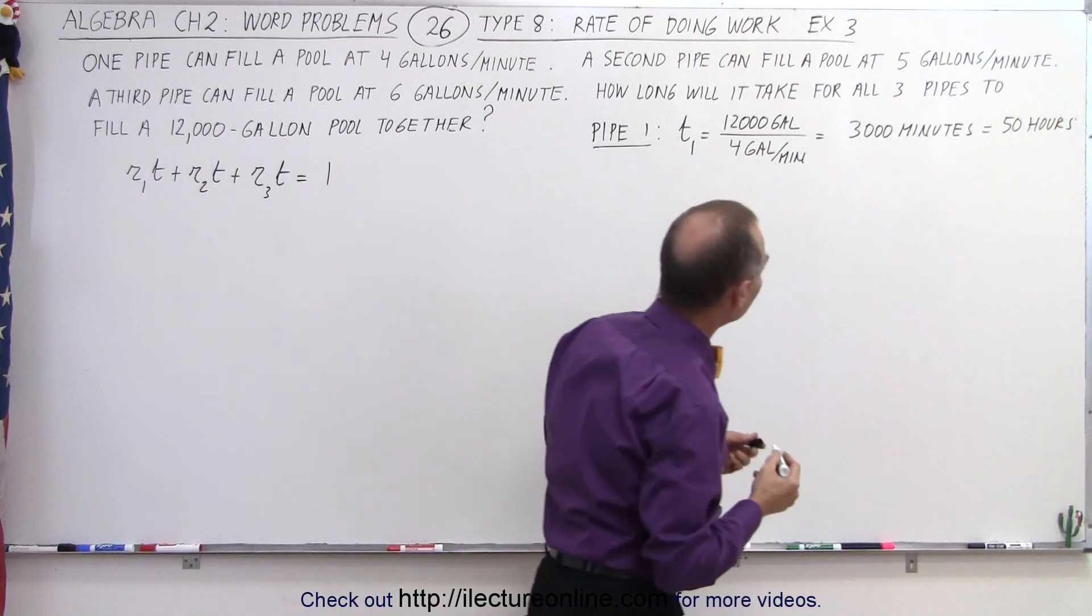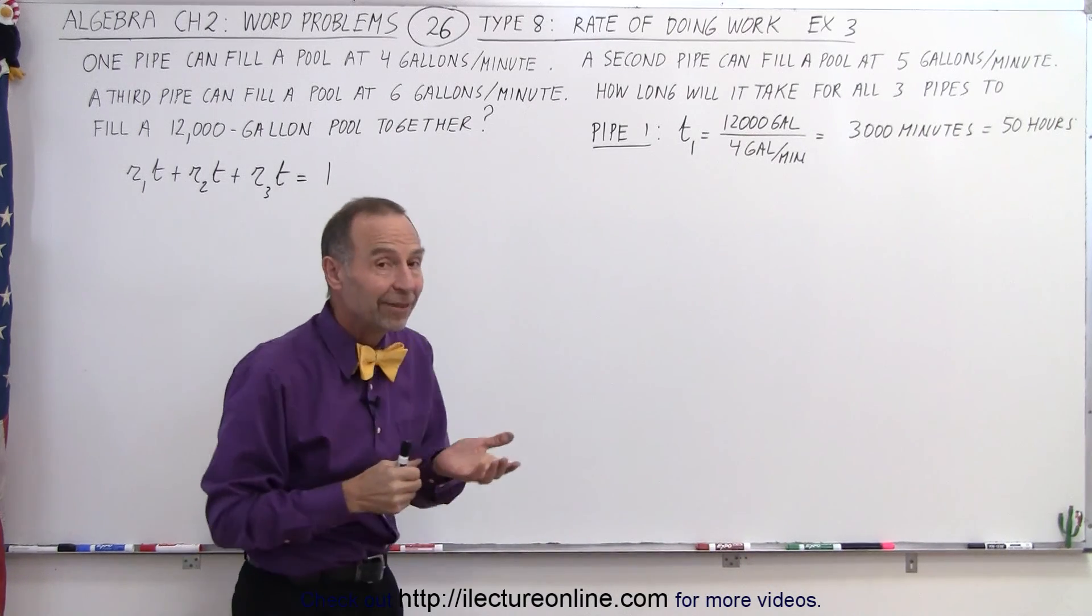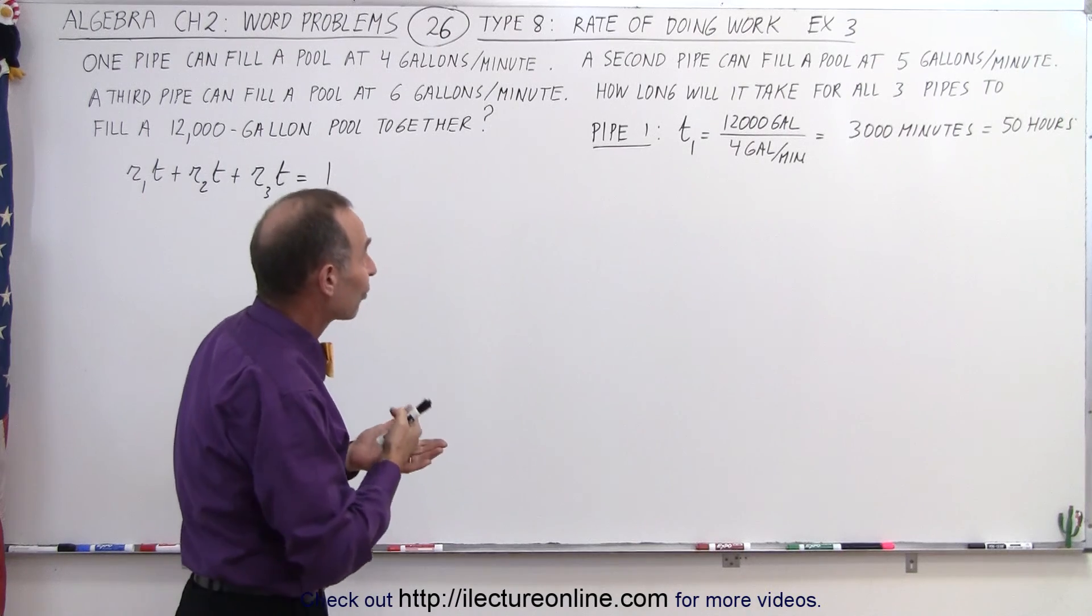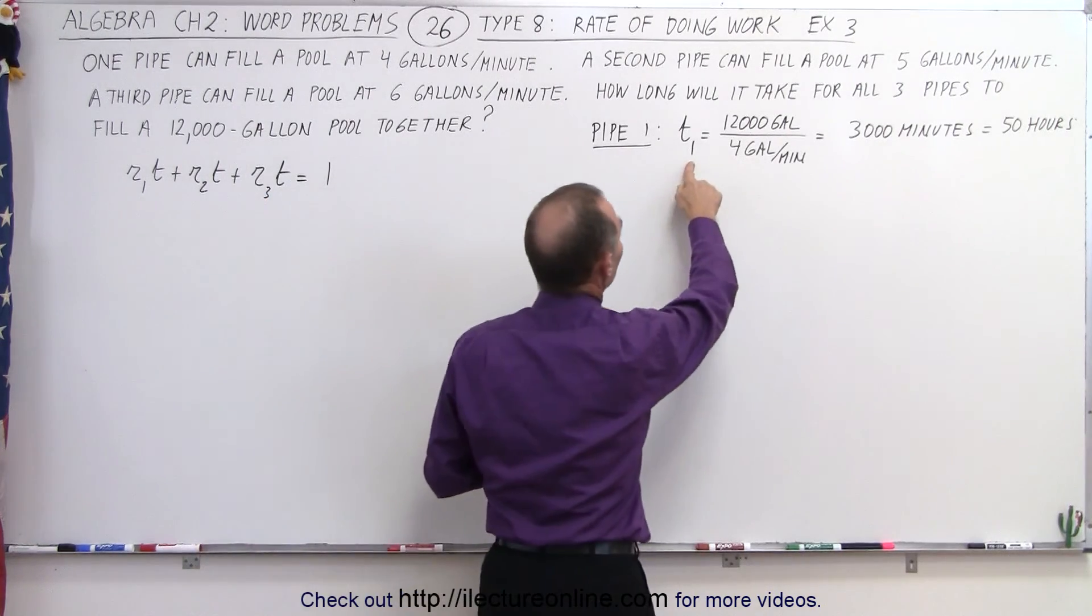That means that the amount of time that it takes for pipe 1 to do the whole job would be 50 hours by itself.